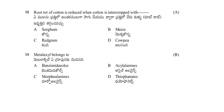Root knot of cotton is reduced when cotton is intercropped with which crop? Options: jowar/sorghum, maize, red gram, or cowpea. The answer is jowar or sorghum — intercropping cotton with sorghum can reduce root knot incidence.